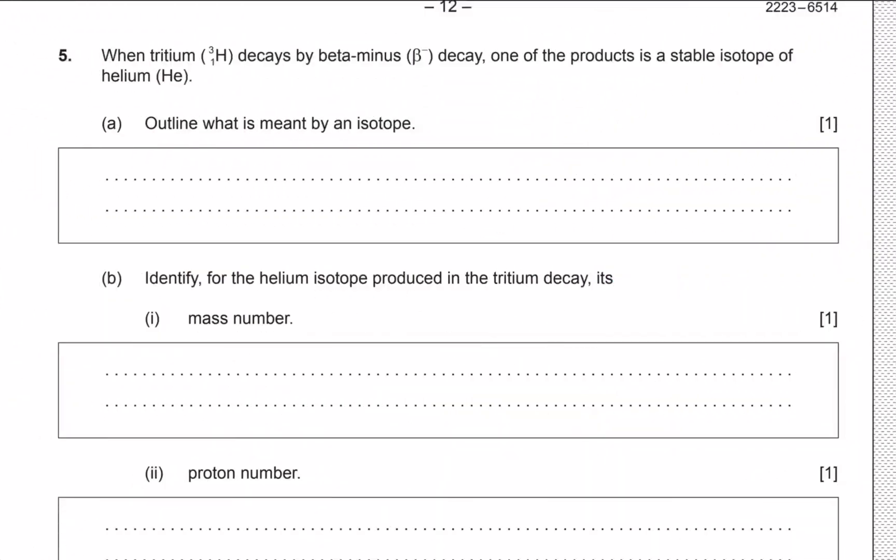Hello guys, welcome to this new video. This is going to be question 5 in the May 2023 timezone 2 paper 2. So here we are told that when tritium decays by beta minus decay, one of the products is a stable isotope of helium.